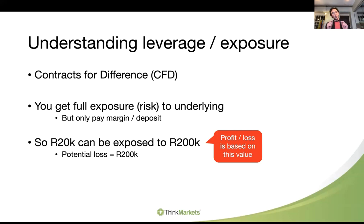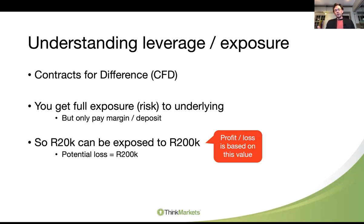There's another way this works: if you went short — betting on the downside — you've sold 200,000 rand worth of shares with 20,000 rand margin. Then a buyout offer comes in at a 100% premium, meaning they're offering 400,000 for your 200,000 of shares. The value doubles to 400,000 and you were betting it would go down. Your exposure has gone from 200,000 to 400,000 and you've lost 200,000. Your counterparty — the platform — holds your 20,000 but wants the other 180,000.